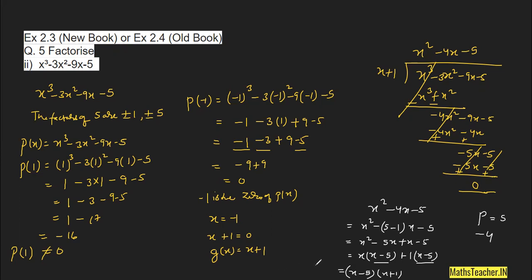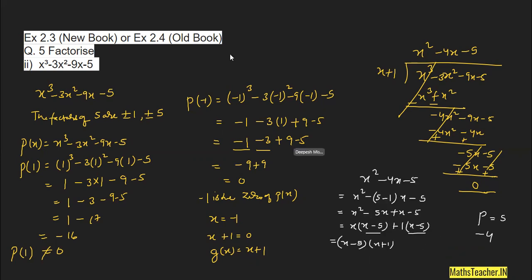Therefore, the three factors of p(x) = x³ − 3x² − 9x − 5 are (x + 1), (x − 5), and (x + 1). So this is how we factorize a cubic polynomial. I hope all of you got it — thank you very much.